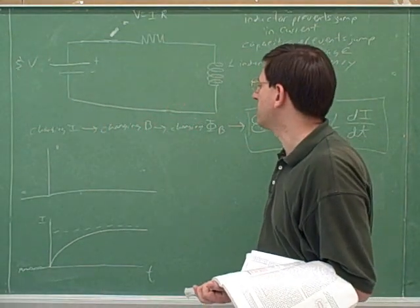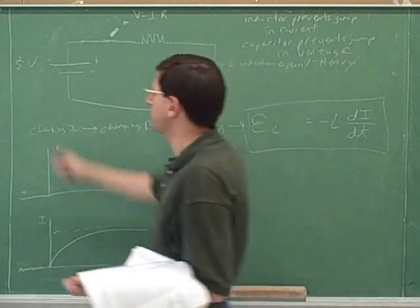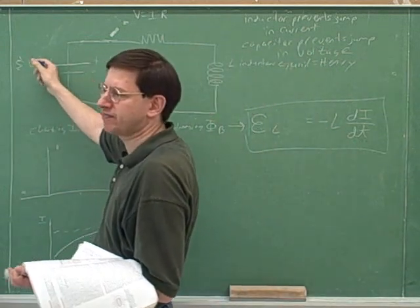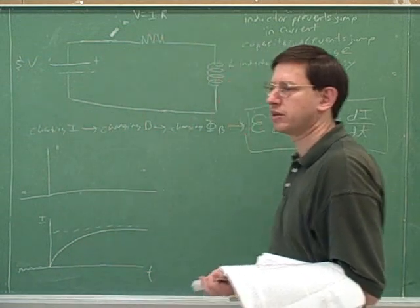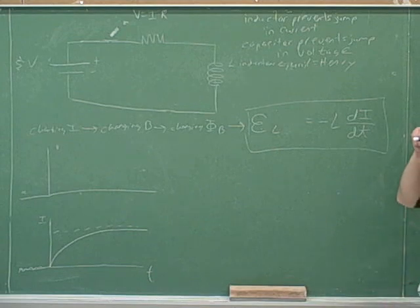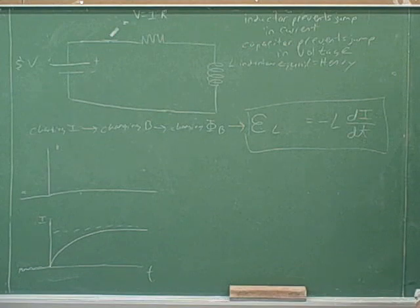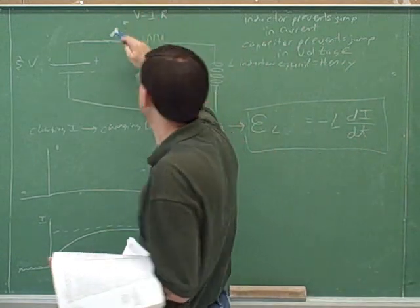At time zero, when we've just closed the switch, what's the voltage drop across the resistor going to be? Let's keep thinking of this as a five-volt battery. We've just closed the switch — what's going to be the voltage drop across this resistor? At time zero, it will be zero. If the current is zero, Ohm's law tells us that when the current is zero, this voltage has to be zero.